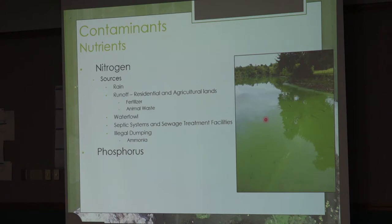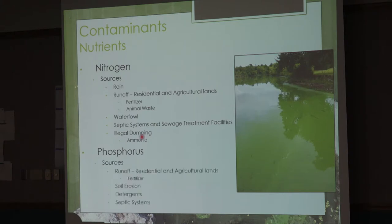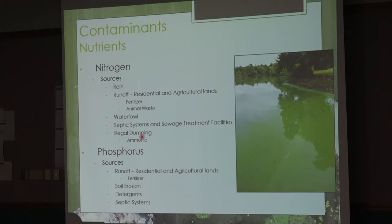Other sources of nutrient pollution include waterfowl, malfunctioning septic systems or insufficient treatment facilities, and — less commonly but it still happens — illegal dumping of ammonia, which is nitrogen; Nebraska still sees this every few years. The other big source is phosphorus — a big one from fertilizer. Most detergents are now going phosphorus-free because of this issue. For a long time, dish soap and laundry soap hid phosphorus to help clean, and it went out the pipe, down the treatment facility, down the stream, and ended up in the Gulf of Mexico.